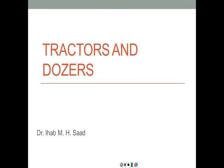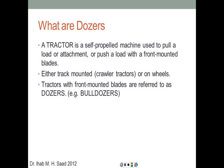Hello and welcome to another class in construction equipment. Today we're going to be talking about tractors and dozers. We're going to learn about their properties, what they are primarily used for, and then how to calculate the production rate. A tractor is a self-propelled machine used to pull or push a load with a front-mounted blade. It can be track-mounted like crawler tractors, or on wheels. Tractors with front-mounted blades are referred to as dozers, like bulldozers.